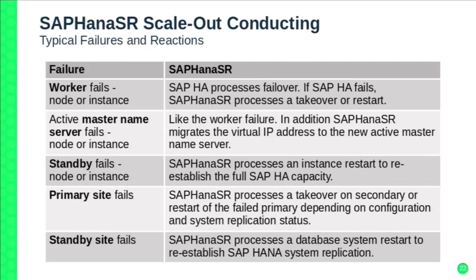If a primary site fails, we check whether the system replication status at that moment was okay — can we be sure all data is on the second site? If yes, an automated takeover runs. If a secondary site fails, we mark that system replication status is now failed, and this site will not take over before HANA reports that system replication is back again.